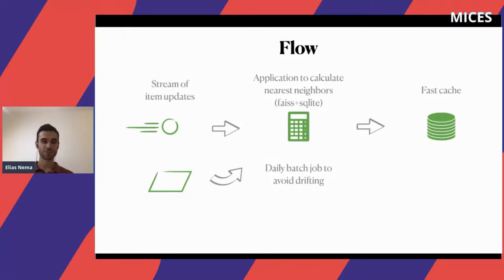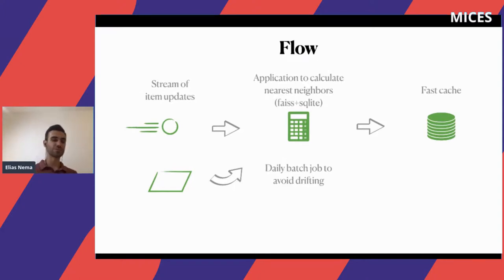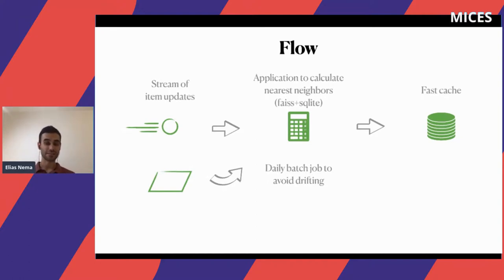Speaking about the architectural flow — we have a stream of item updates that we listen to. If an item was posted, updated, or something else, we have an application that constantly listens to the stream. It calculates the nearest neighbors for the embeddings, uses files — SQLite in our case — and then stores these items in a fast cache.